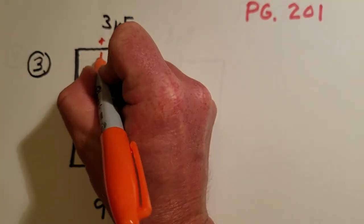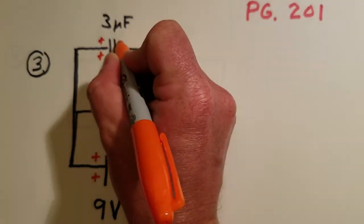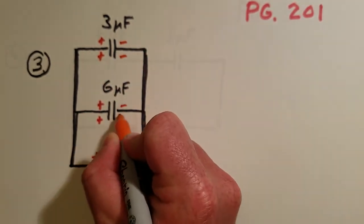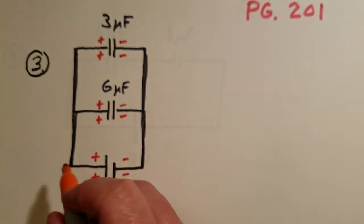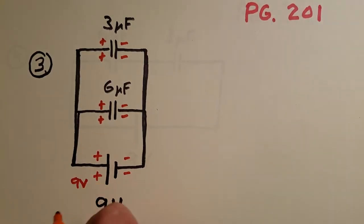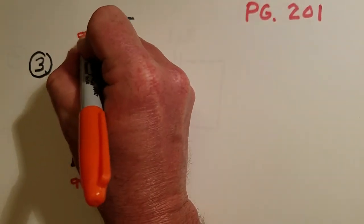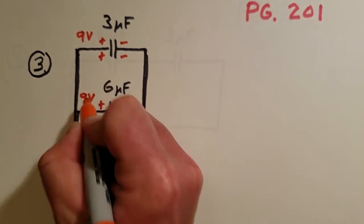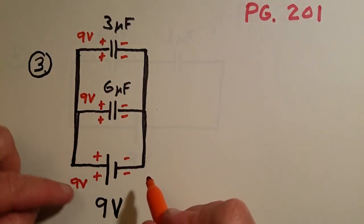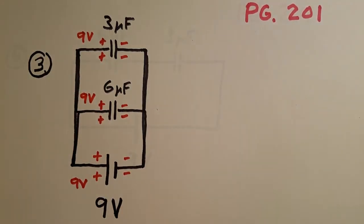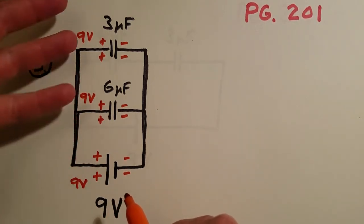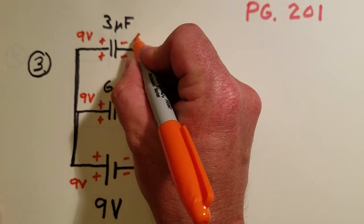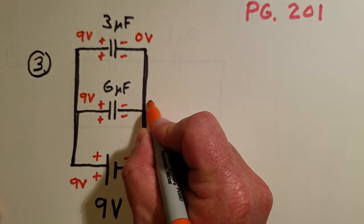Likewise with the negative charges on this side. Once everything stops moving, if you're sitting at nine volts here, you're also going to have to be at nine volts here and here. If these voltages weren't the same, then there would be a flow of charge. But if things have stopped flowing, then the capacitors are full and you're already at nine volts there. Over here, everything's going to be at zero volts.